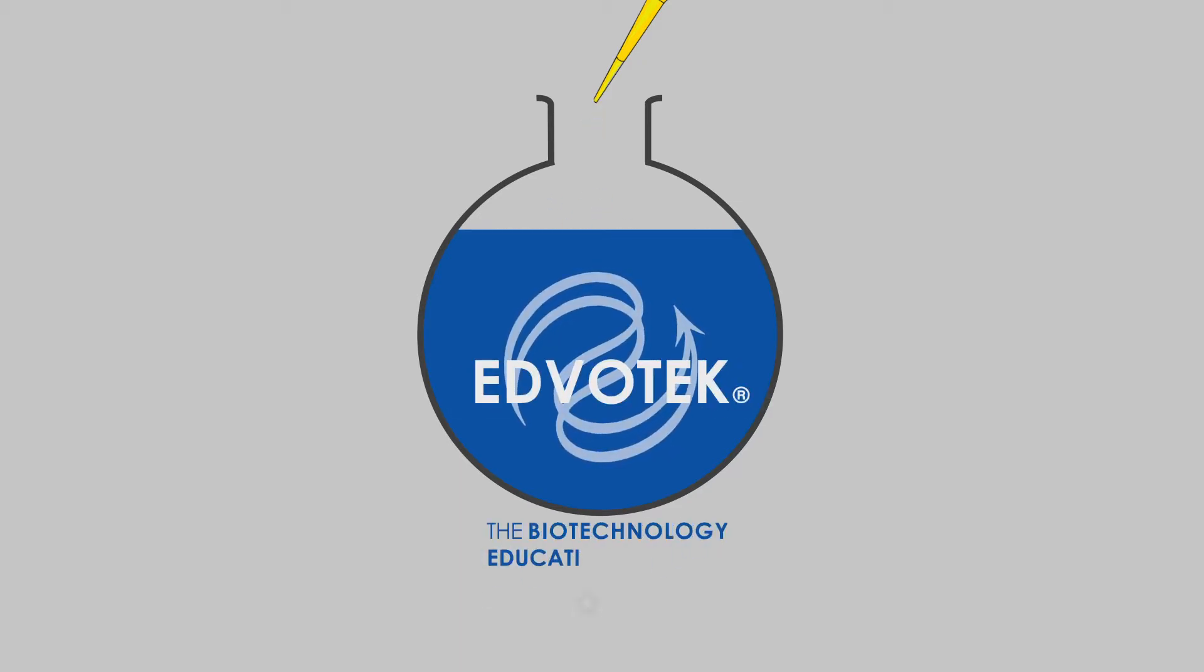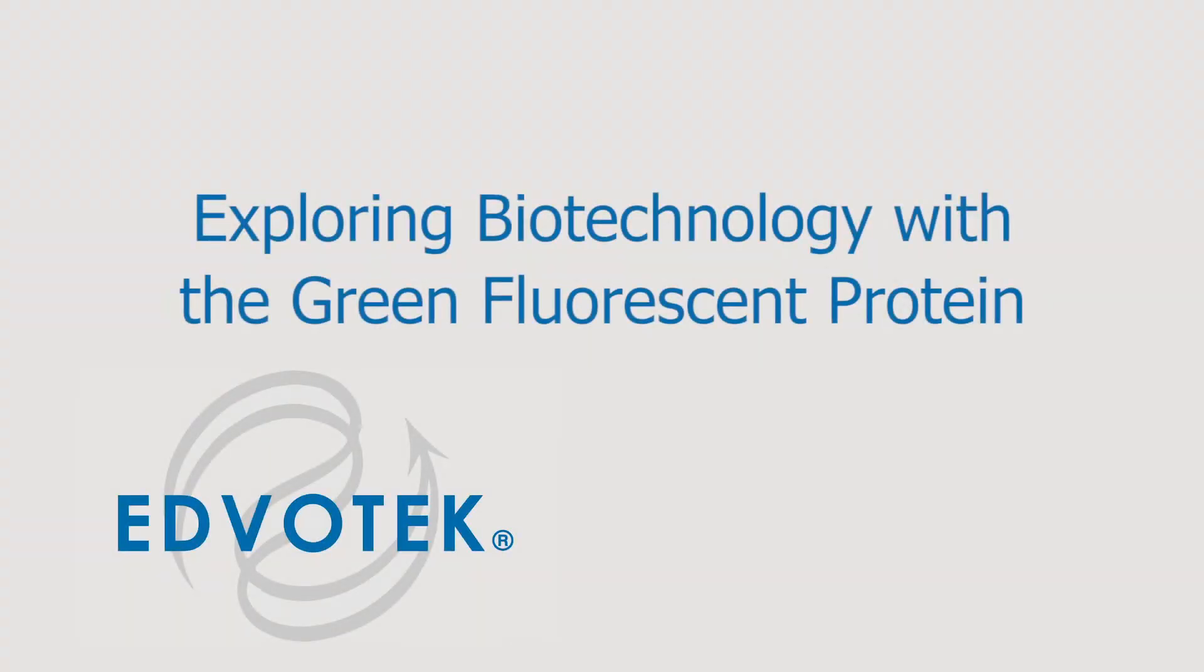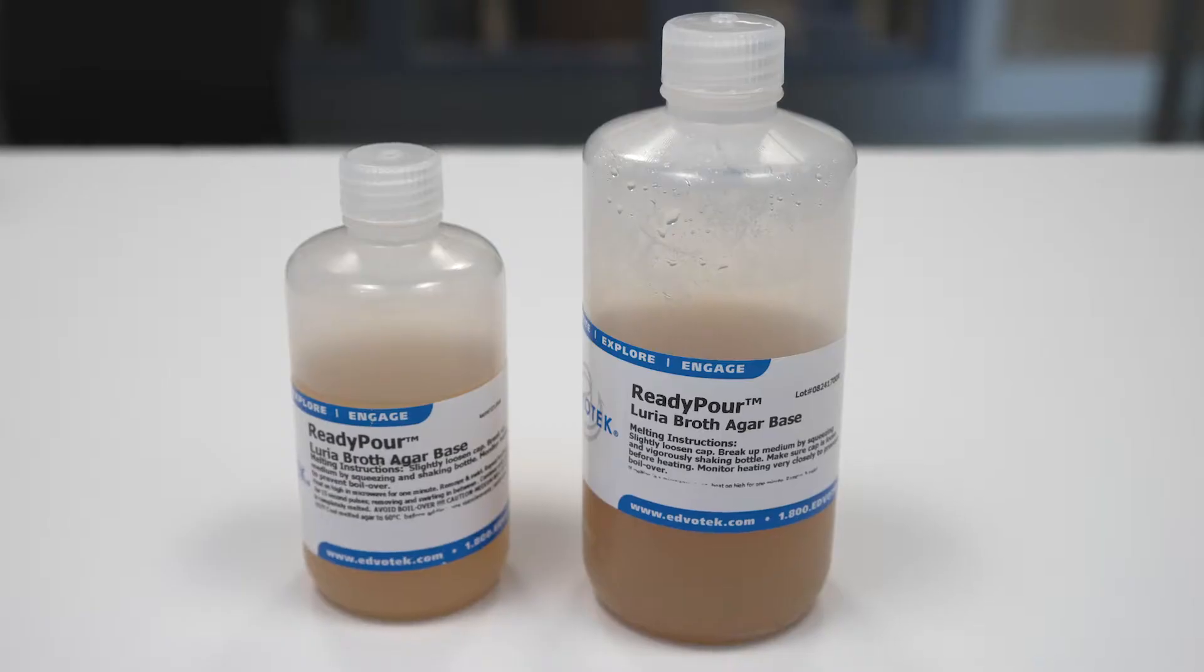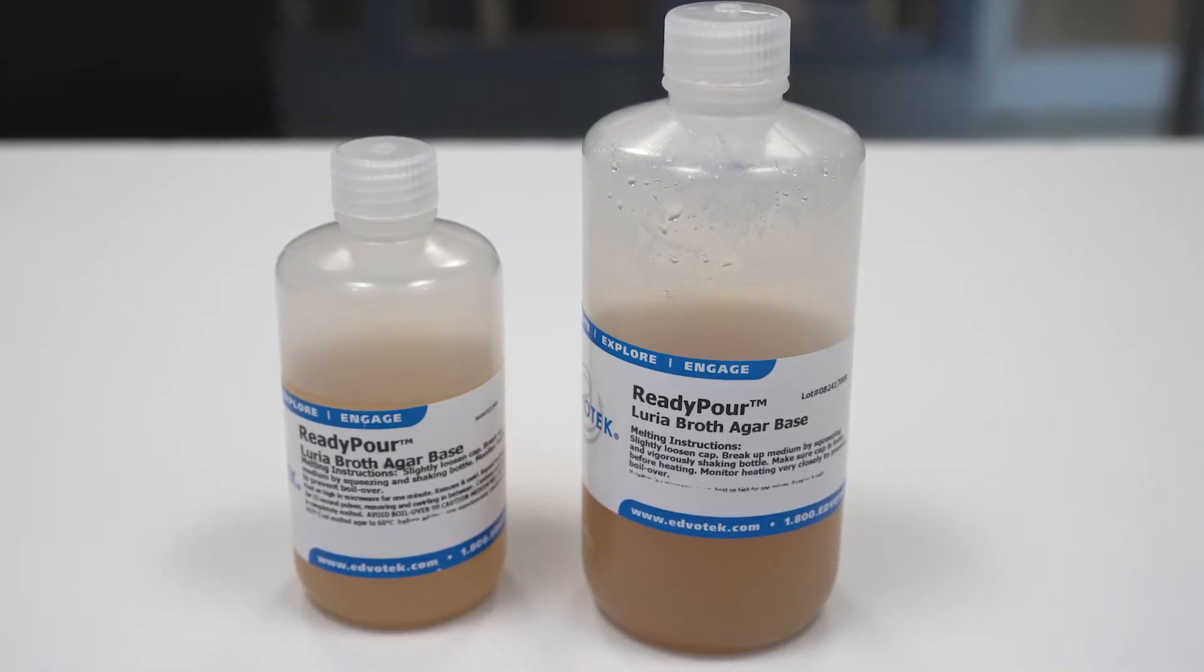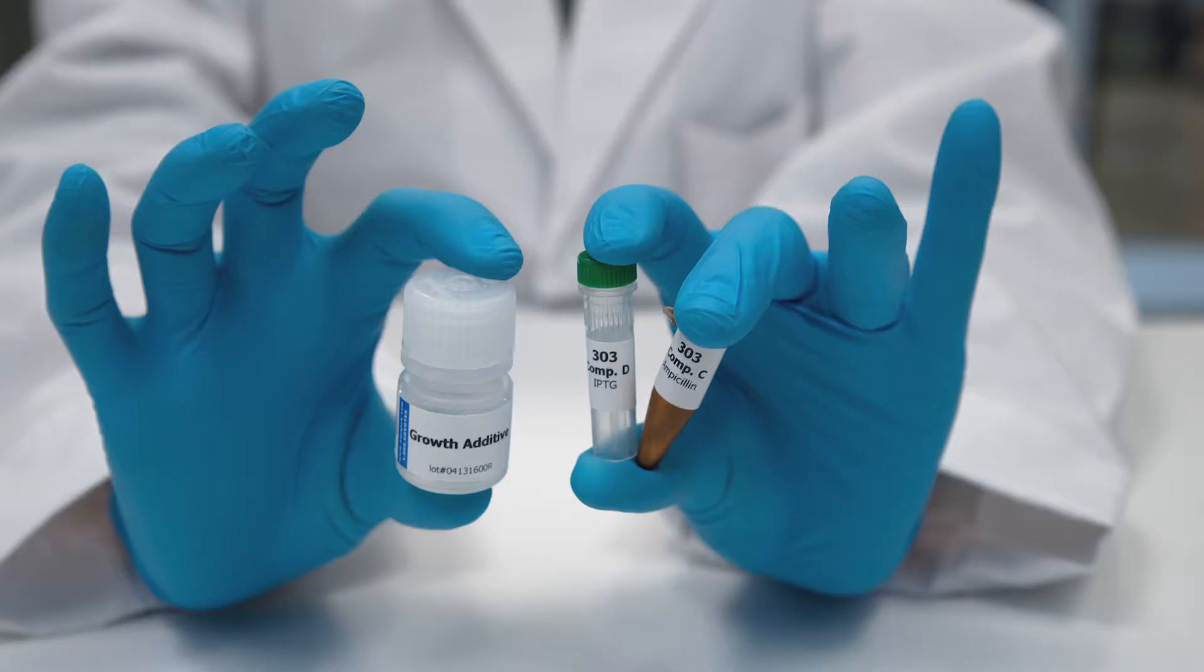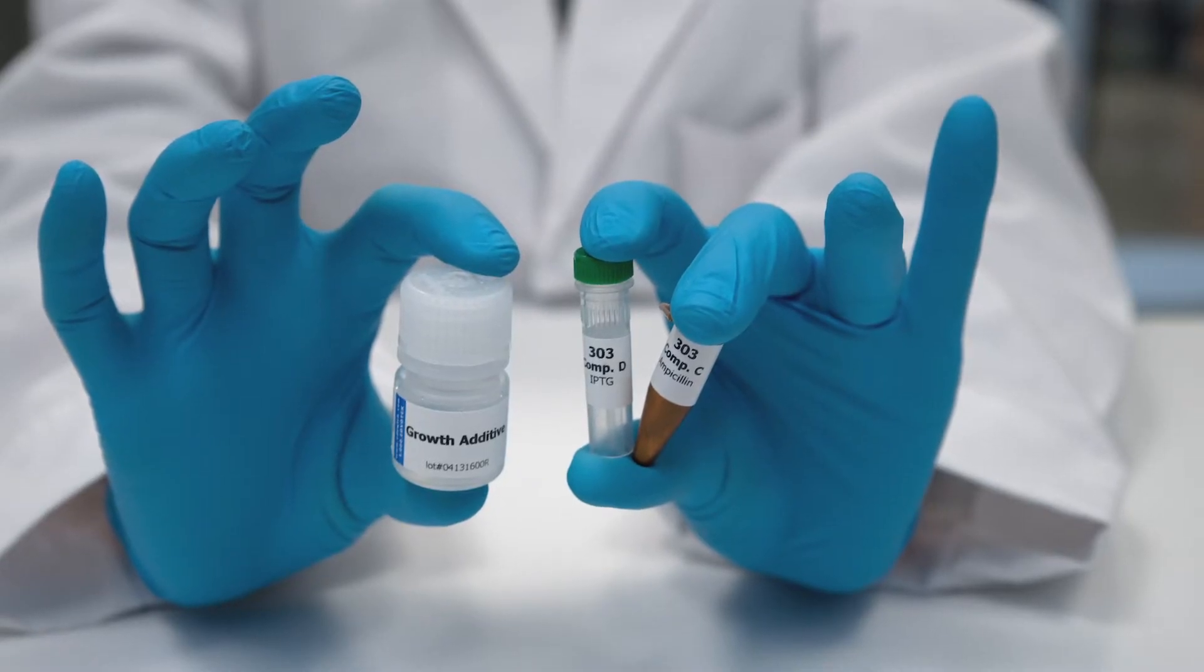Edvotech instructional videos presents pre-lab preparations for exploring biotechnology with green fluorescent protein: pouring LB agar plates. For this prep you will need one large and one small bottle of ready pour LB agar, ampicillin, IPTG, and growth additive.